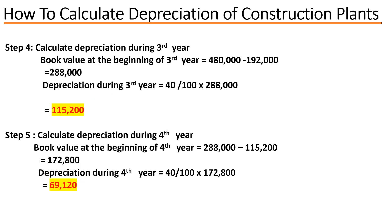Now at the third year: to calculate depreciation during the third year, the book value at the beginning of the third year is the book value at the beginning of the second year (480,000) minus depreciation during the second year (192,000), giving us 288,000. Depreciation during the third year is 40/100 × 288,000, giving us 115,200.